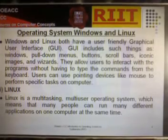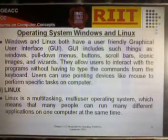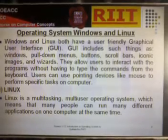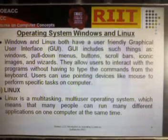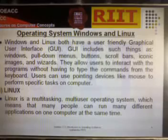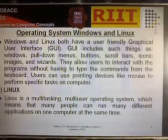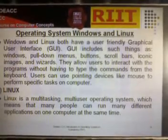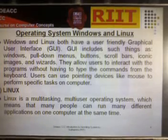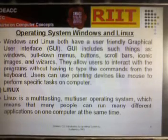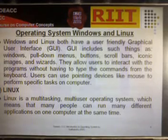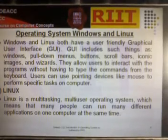GUI includes things such as Windows, Pull Down Menus, Buttons, Scrollbars, Iconic Images, and Wizards. They allow users to interact with the program without having to type commands from the keyboard. Users can use a pointing device like a Mouse to perform specific tasks on the computer.